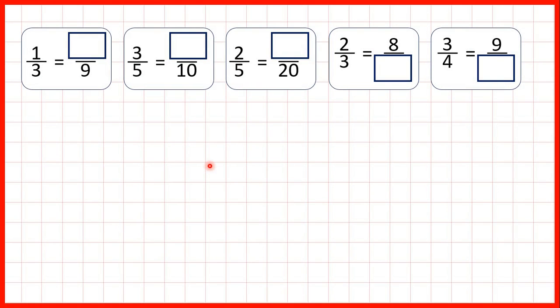We can use multiplication to find equivalent fractions — that is, to find fractions which have the same value. So first, one third is equivalent to how many ninths?